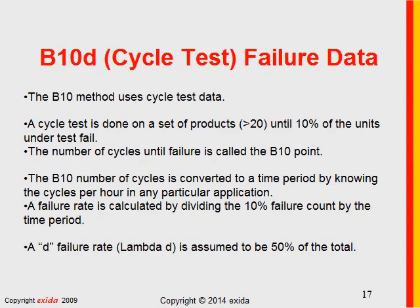The B10 method uses cycle testing. A cycle test is done on a set of products — most useful for mechanical or electromechanical products — cycling them on and off as fast as possible. Given a set of products, typically more than 20, you run the test until 10% fail. The number of cycles until failure is called the B10 point. You convert cycles to a time period by knowing cycles per hour in a particular application and calculate a failure rate accordingly.